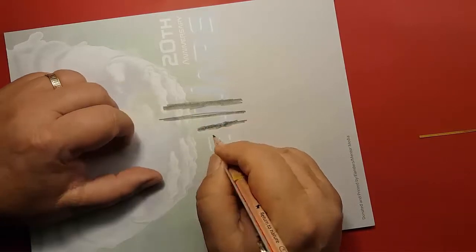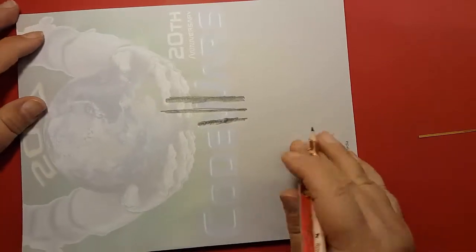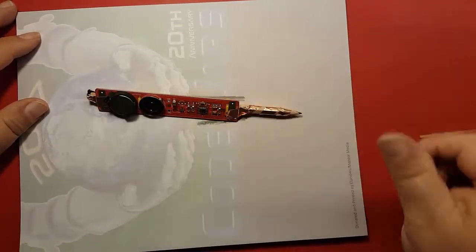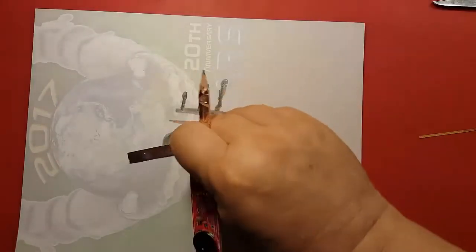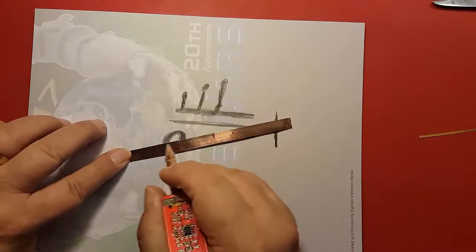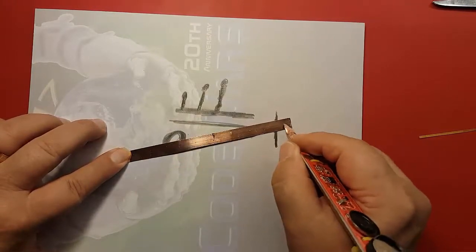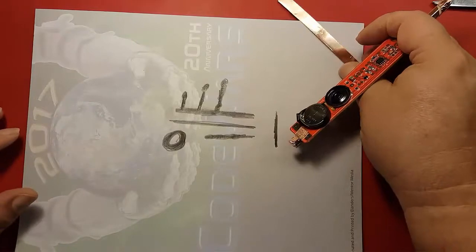But what if you had something more conductive than the graphite line? Here I'm using a piece of the copper tape that came with the kit. Very conductive. No difference no matter the length of the circuit.